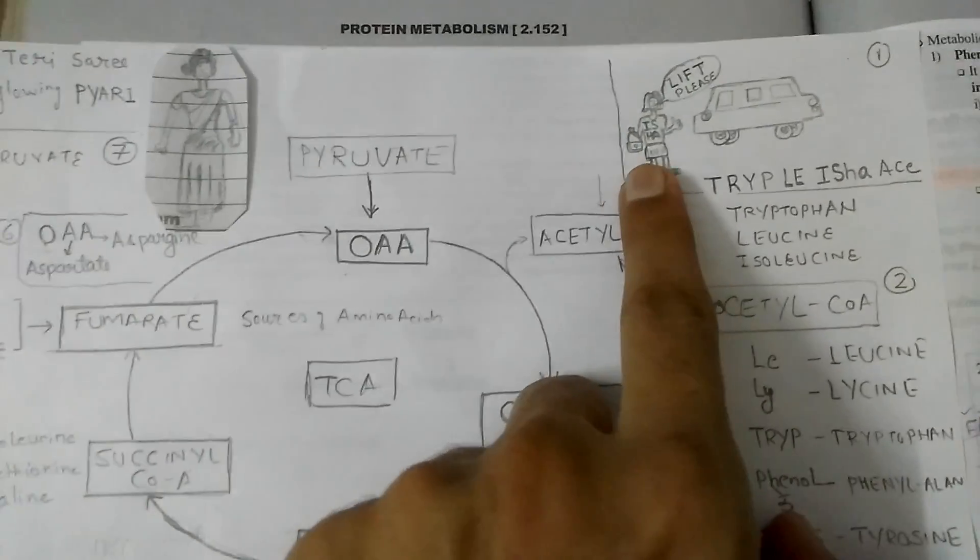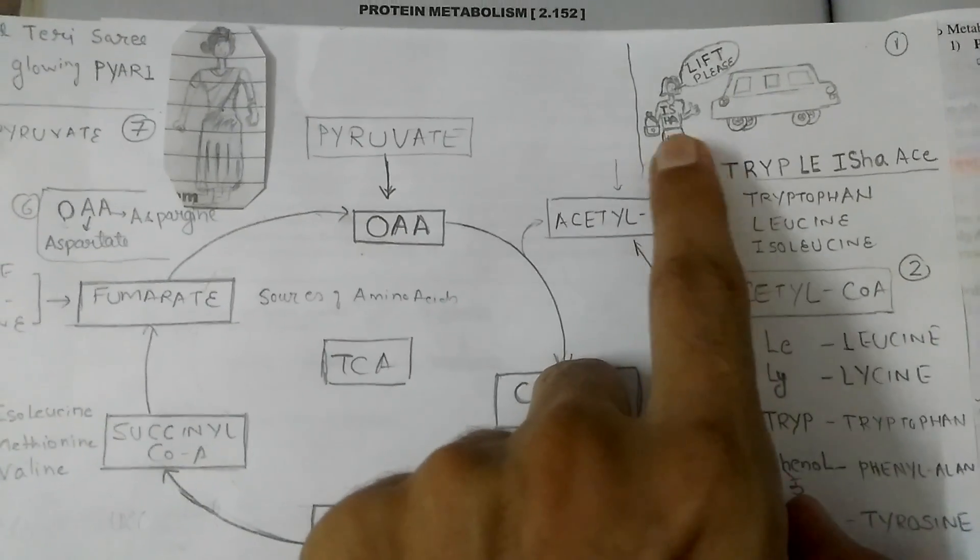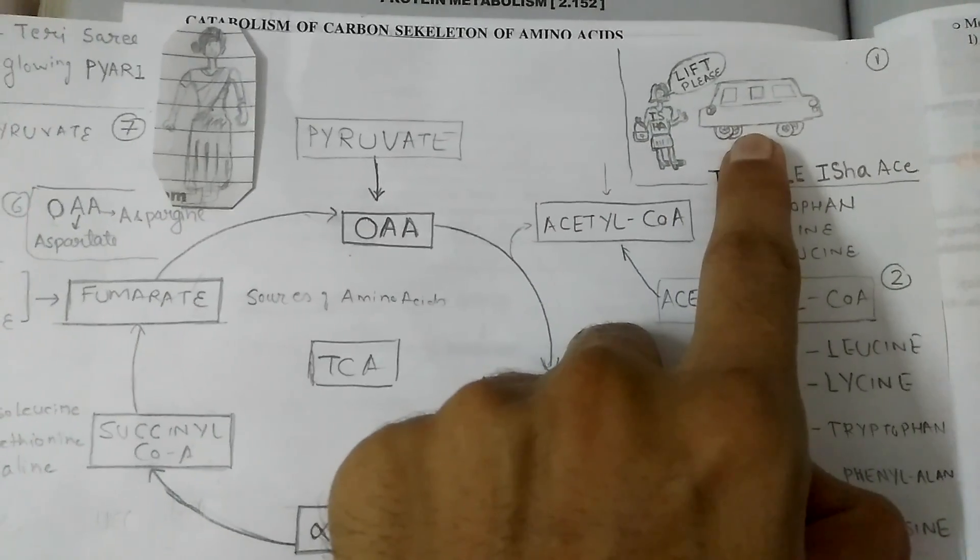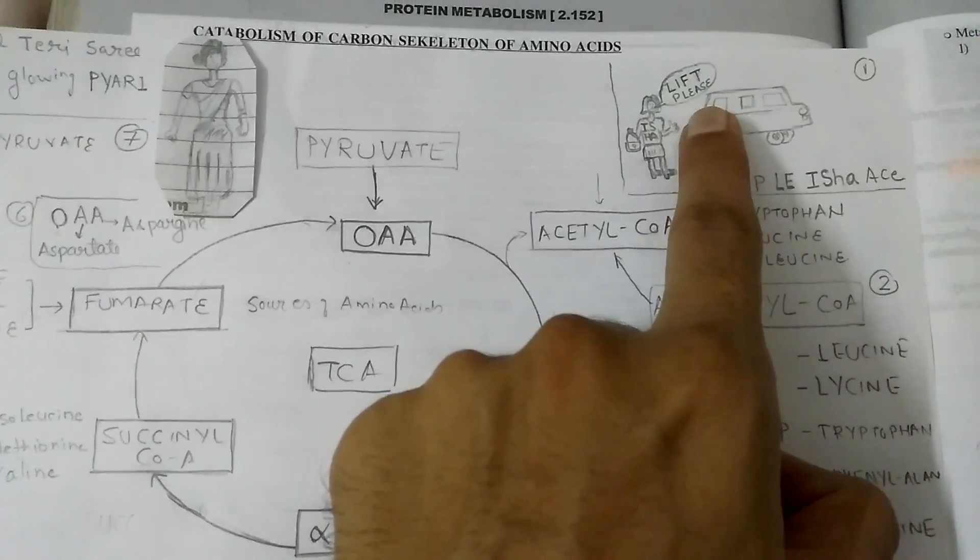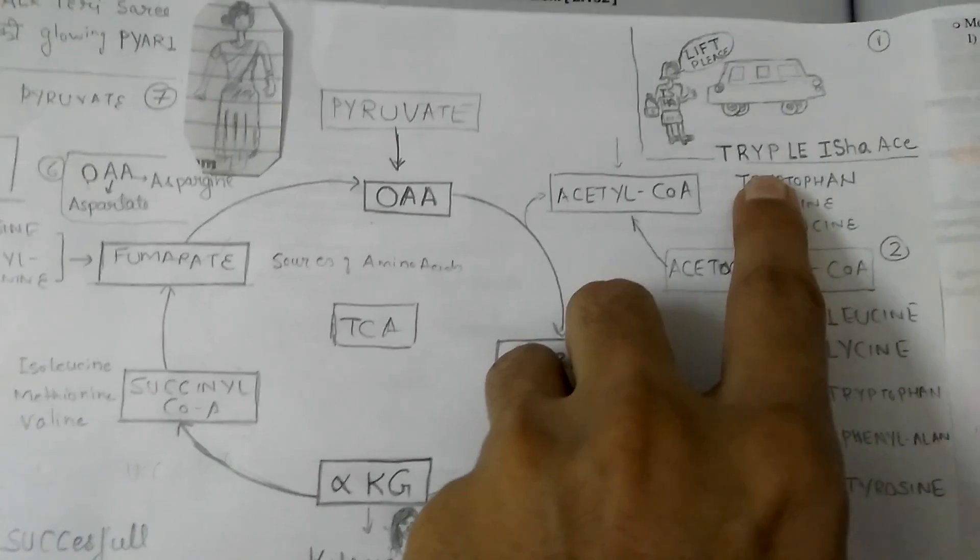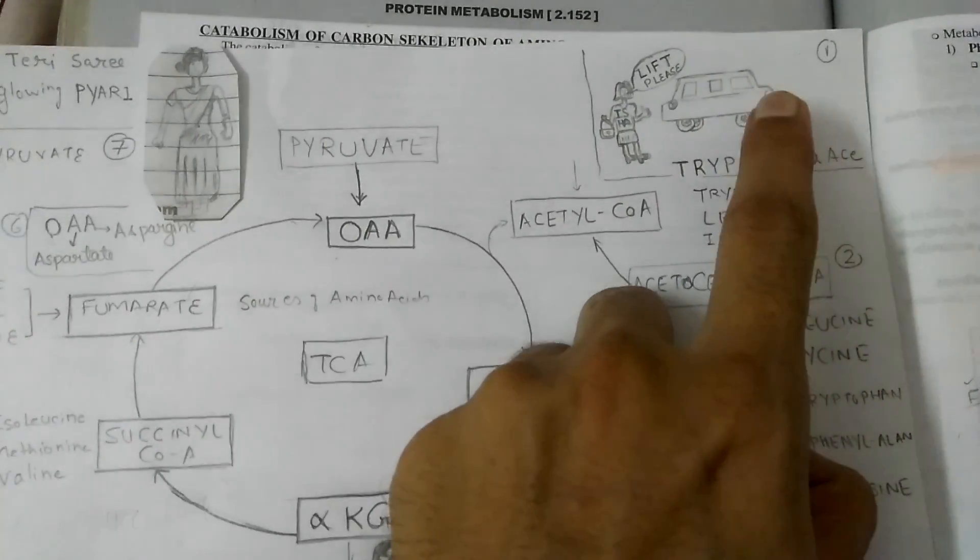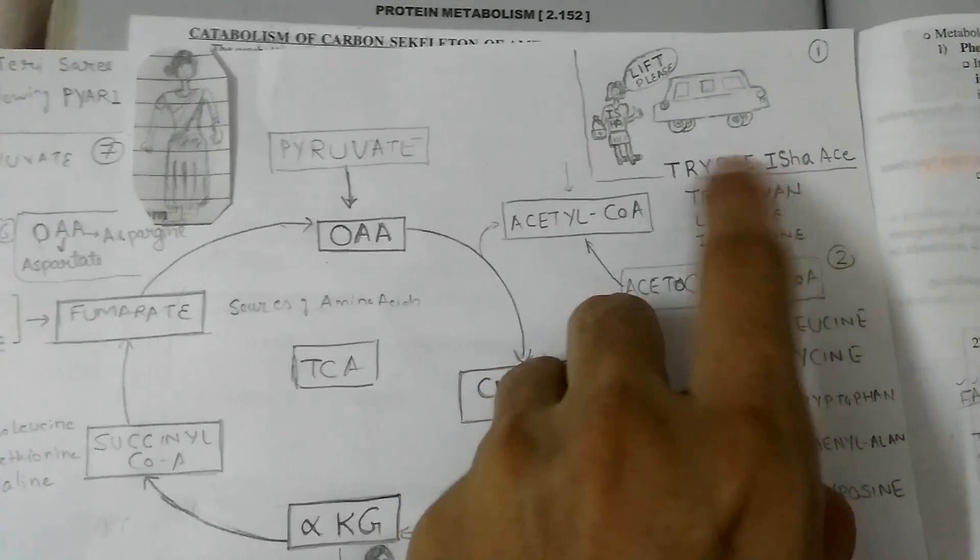First of all, there is a girl named Isha asking for a lift. This is a car, so she is saying lift please. This is triple A Isha, meaning tryptophan, leucine, and isoleucine.